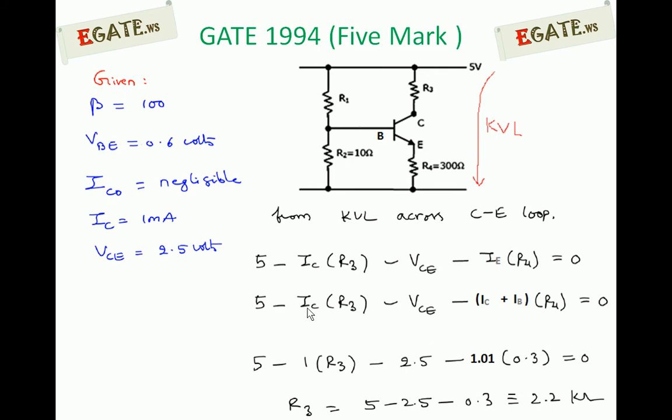Substitute the values: 5 minus IC value is 1 into R3 minus VCE is given as 2.5. Again, IC plus IB is 1.01 into 0.3.